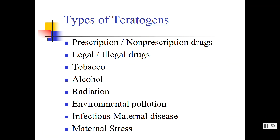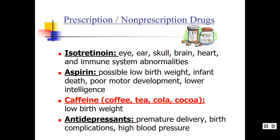There are many types of teratogens: prescription and non-prescription drugs, legal and illegal drugs, tobacco, alcohol, environmental pollutants like radiation, maternal disease, and maternal stress. As a non-prescription drug, caffeine — found in coffee, teas, sodas, and even chocolate — can lead to low birth weight in the child, depending on how much is consumed and how often. Chapter four will discuss consequences of low birth weight and its relation to prematurity.